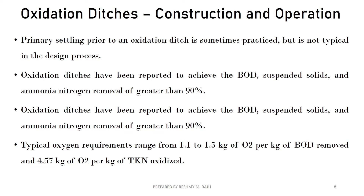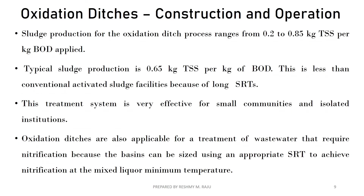BOD, suspended solids, and ammoniacal nitrogen are removed up to 90%. Typical oxygen requirements are 1.1 to 1.5 kg of oxygen per kilogram of BOD removed, and 4.57 kg of O₂ per kg of TKN oxidized. TKN — total Kjeldahl nitrogen — is a form of nitrogen. Sludge production ranges from 0.22 to 0.85 kg TSS per kg of BOD applied, with a typical value of 0.65 kg TSS per kg of BOD.